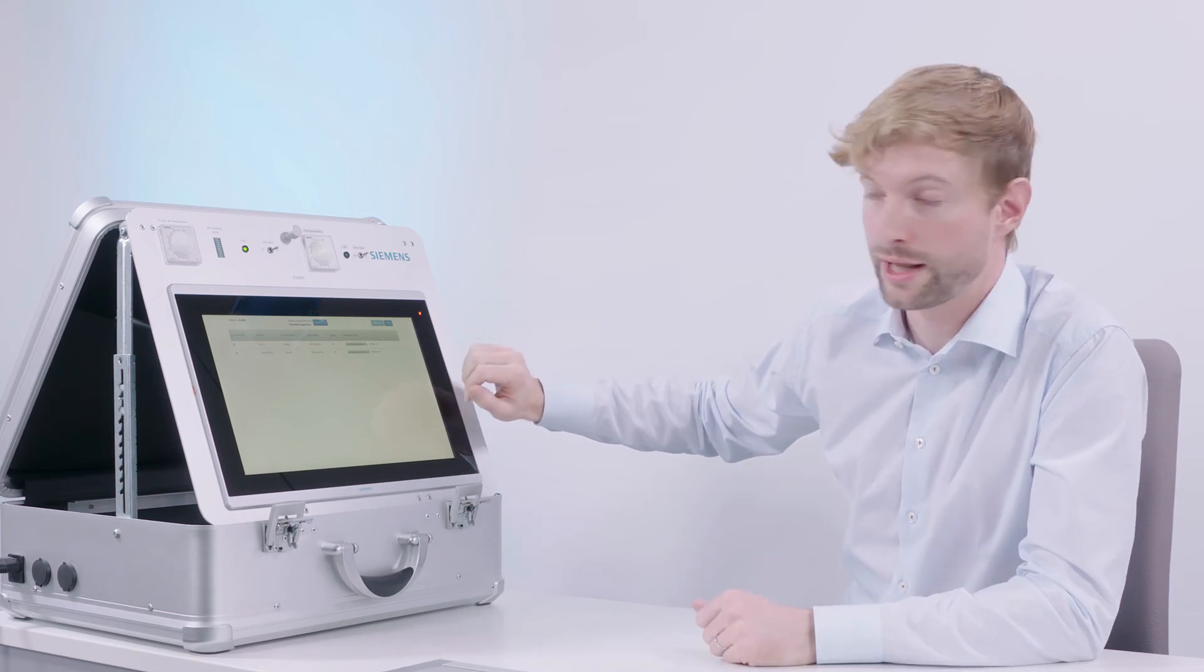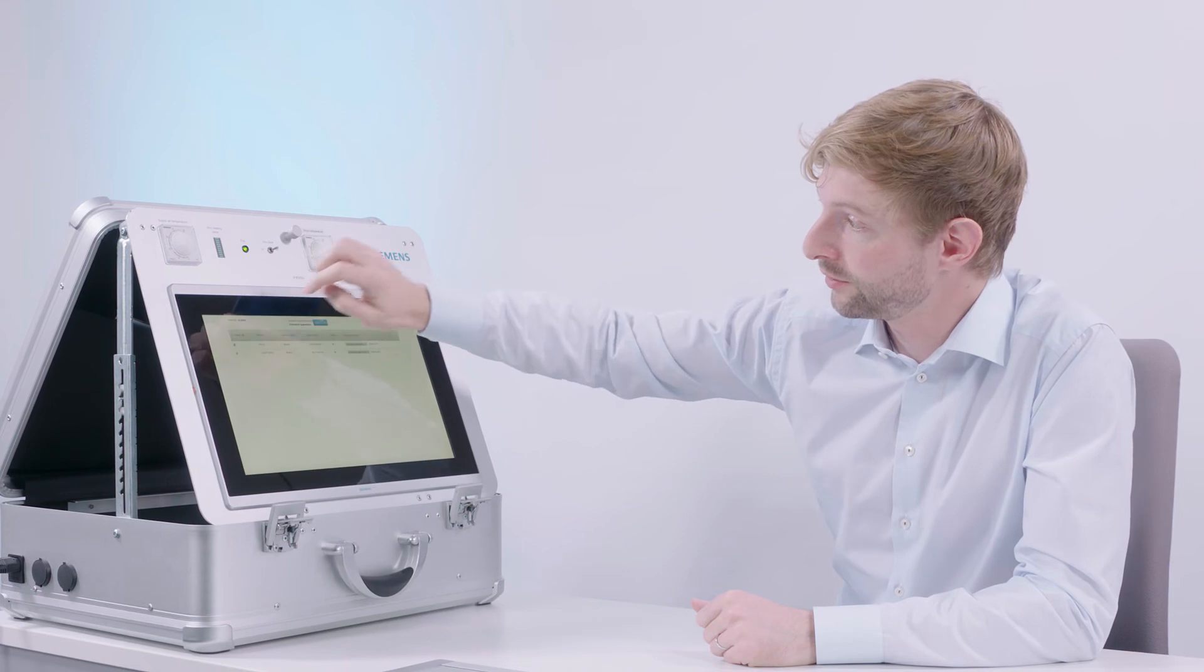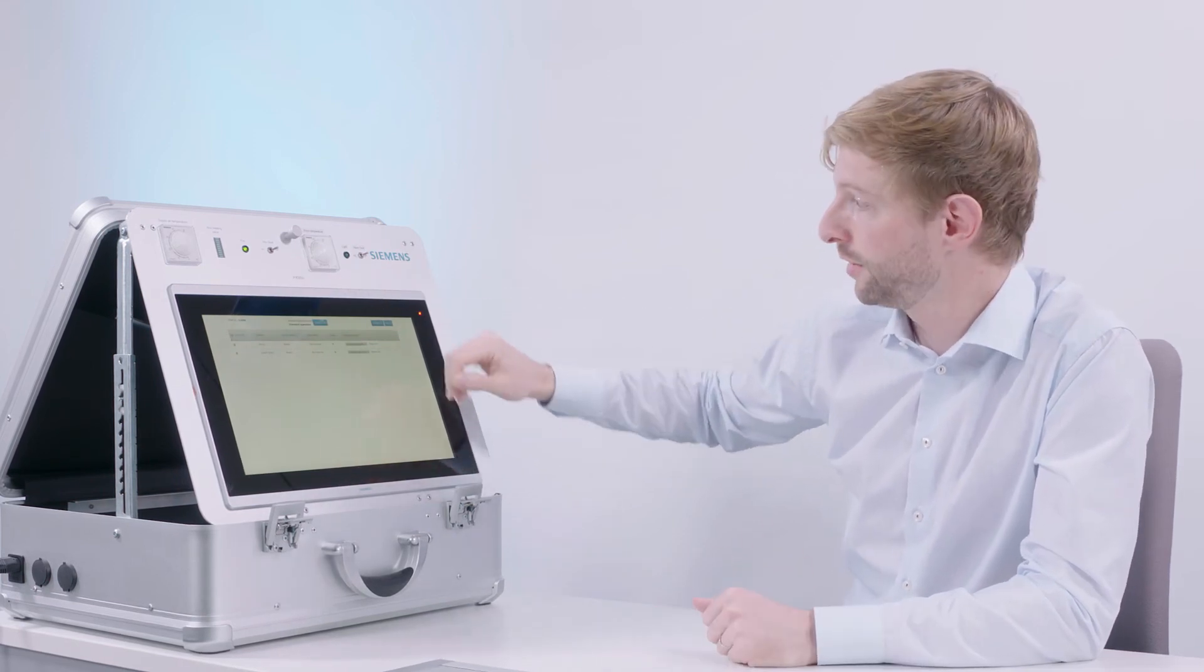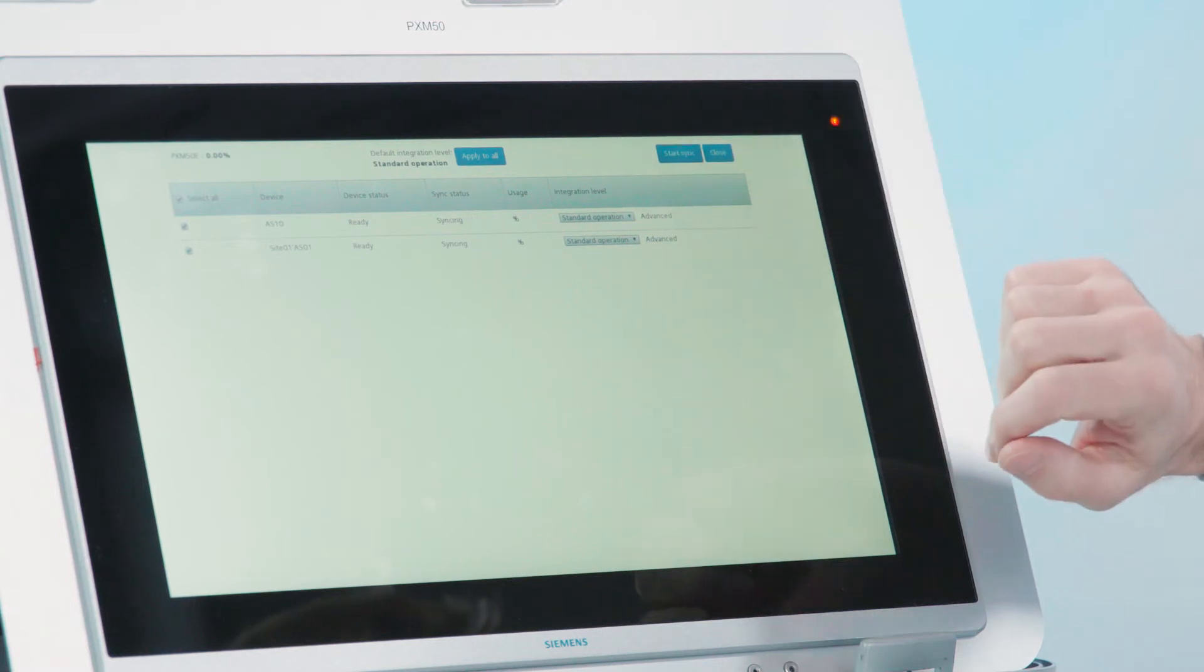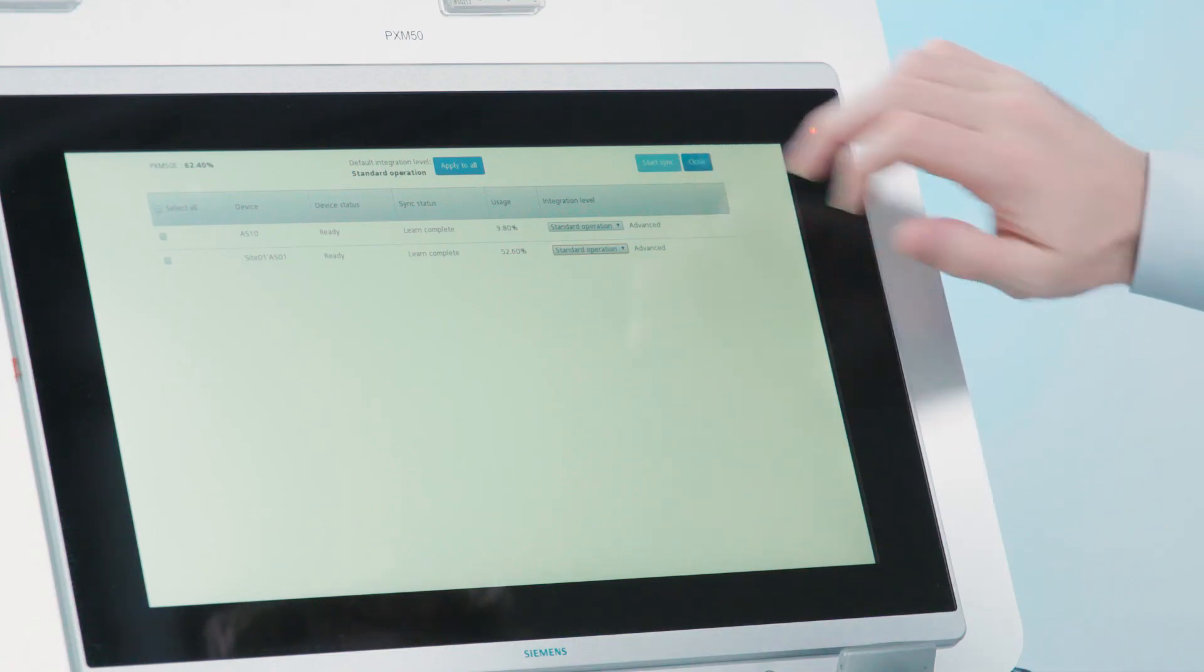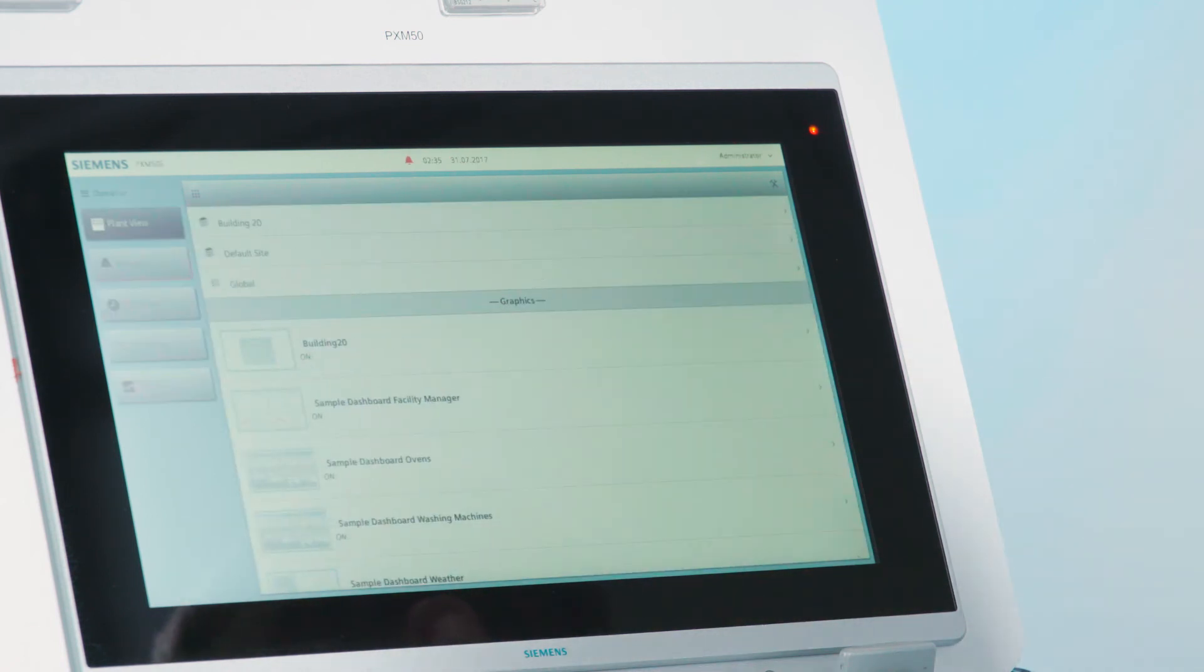Once you're done with your selection altogether, simply select all the devices from which you want to integrate points from, and hit the button Start Sync. Once the synchronization has completed, we can leave this integration dialog by hitting Close, which brings us back to the main Segal Control Point operation screen.